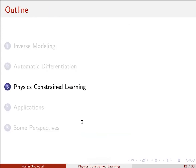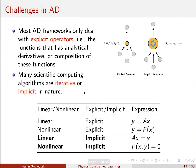Most AD frameworks only deal with explicit operators — functions that have analytical derivatives, for example sine, cosine, plus, minus, or compositions of these functions. This is what people use in deep neural networks: activation functions and linear transformations are all explicit operators. However, for many scientific computing algorithms, many algorithms are iterative — for example, GMRES, Newton-Raphson, or solving a linear or nonlinear system using bisection method.